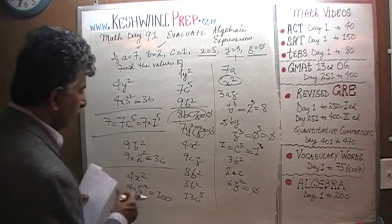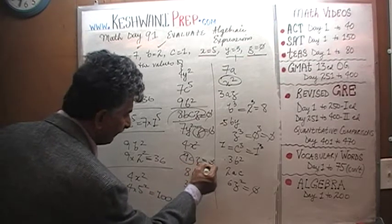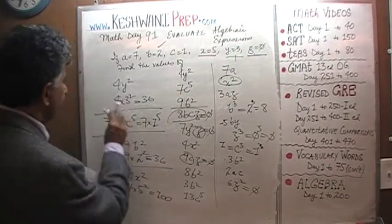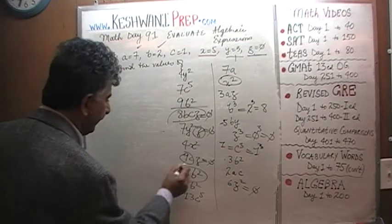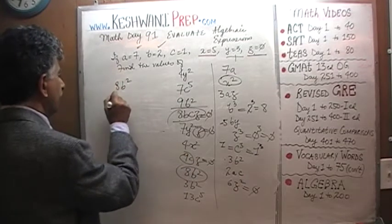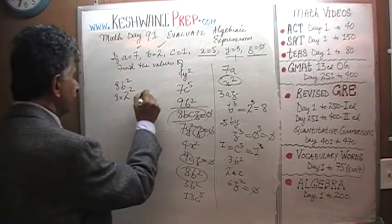Let's keep on going. 9C times Z, Z is 0, so this is going to be 0. 8B squared, 8B squared, 8B is 2. 2 squared is 4, 4 times 8 is going to be 32.